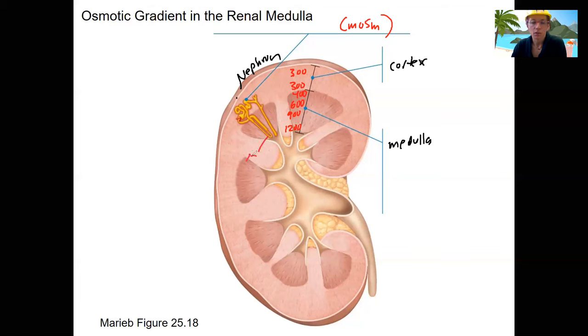This would be where those juxtamedullary nephron loops are going to dip down. So 1,200 is what the medulla is here. And therefore, because of equilibrium and how that works, inside the nephron loop, it's also going to be 1,200.